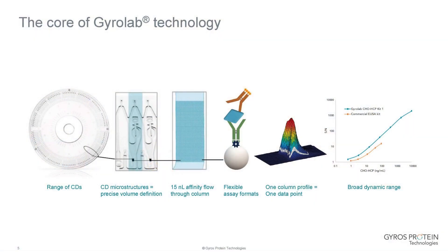The core of the Gyrolab technology involves the CD, or compact disc. This is the equivalent of a microtiter plate where the immunoassay reaction happens. We have various ranges of CD involving different volumes, but among the CDs we have microstructures where the immunoassay happens, involving precise volume definitions. Samples and reagents are transferred to the microstructure as part of the instrument. At the bottom of the microstructure we have a 50 nanolitre affinity flow-through column where the immunoassay reaction happens.